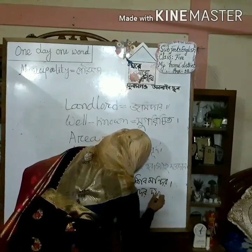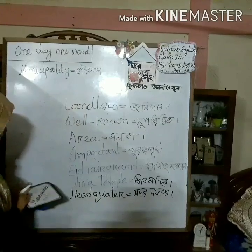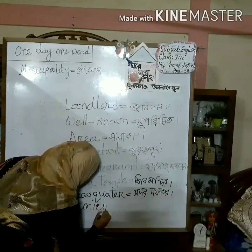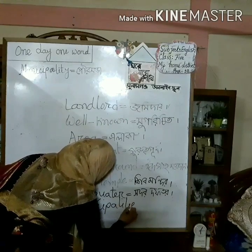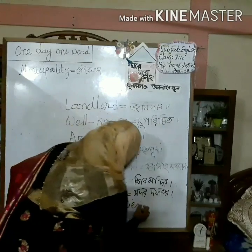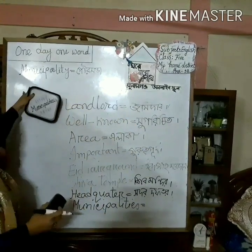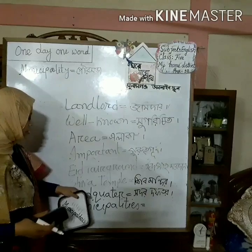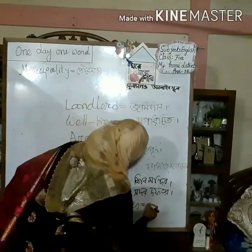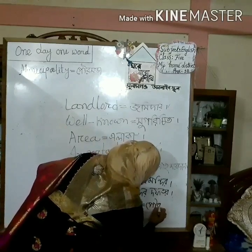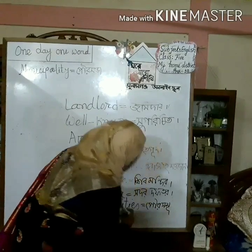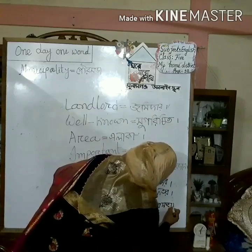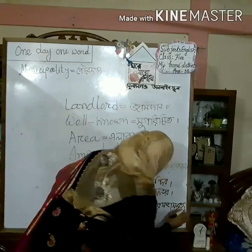Another word is 'municipalities.' Municipalities means 'Pourashava Samuha' (group of municipalities). Note that 'municipality' is singular but 'municipalities' is plural — it means more than one Pourashava. Pourashava Samuha.